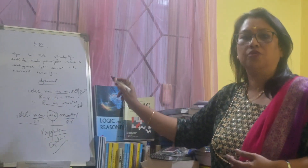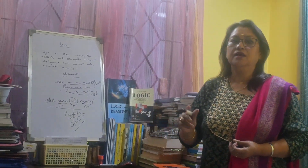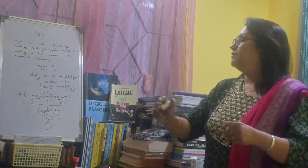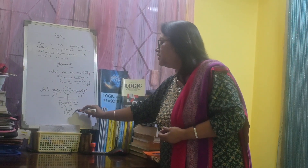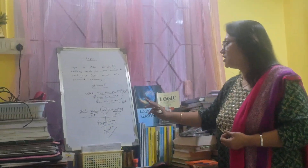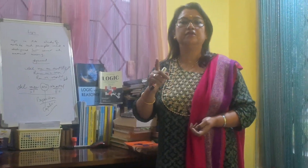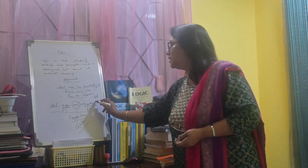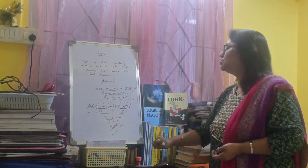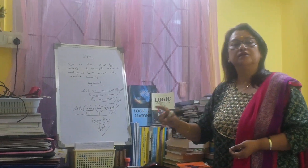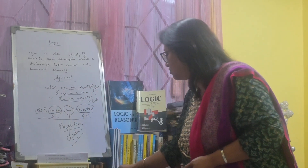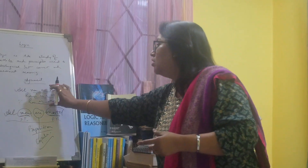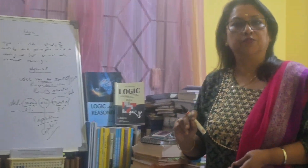In a proposition, we find two terms: the subject term and the predicate term, which are connected by the copula. The copula expresses a relation between the subject term and predicate term. So a proposition is a statement of a certain relation between two terms — subject term 'man' and predicate term 'mortal.' A proposition is a single sentence, while an argument is a group of propositions. There may be three or four propositions in an argument, but each single sentence is called a proposition.